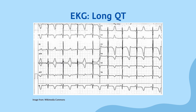On EKG, the QT interval must be calculated and compared to the normal range. It is important to calculate a corrected QT when assessing heart rates outside of 60–100 beats per minute. The corrected QT is equal to the QT interval on your EKG divided by the square root of the R-to-R interval.